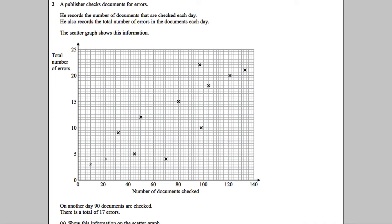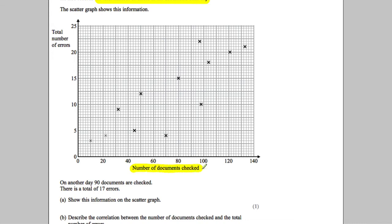A publisher checks documents for errors. He records the number of documents that are checked each day and the total number of errors in the documents each day. You've got a graph, so on the x-axis you've got the number of documents checked and on the y-axis you've got the number of errors.